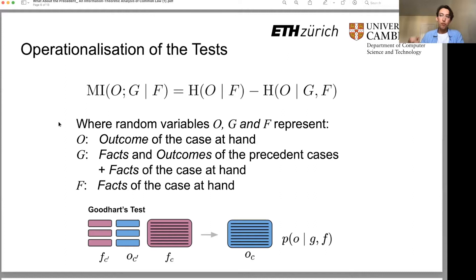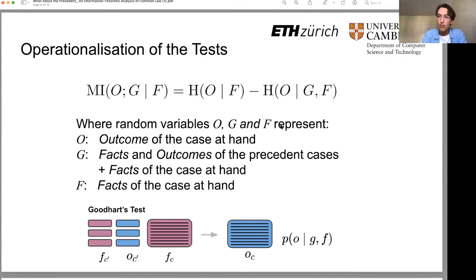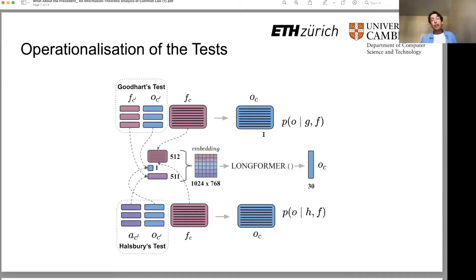Goddard's view conversely focuses on the facts instead of the arguments from the precedent. Notably, in both instantiations we provide the facts of the case at hand — the case we're trying to predict the outcome for — as well. But crucially, in neither do we provide the arguments of the case at hand. If you were to give the arguments of the case at hand, you'd essentially be giving the spelled-out answer, so that information shouldn't be present in order for this to make sense as a test.